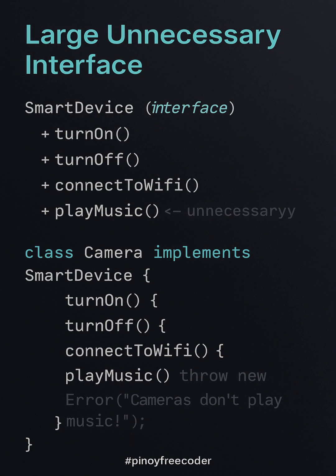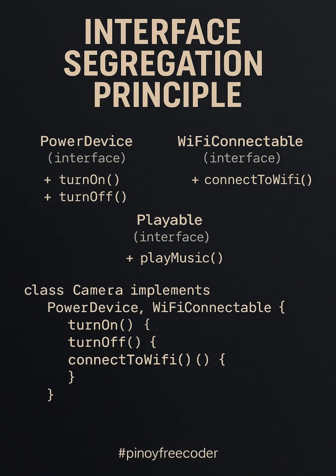The Interface Segregation Principle tells us that we should avoid forcing classes to implement methods they don't need. In this example, we have a smart device interface that includes unnecessary methods like play music, which a class like camera doesn't require. The camera class is forced to implement play music, even though it doesn't make sense, which is inefficient and violates ISP. To fix this, we can break down the large smart device interface into smaller, more specific interfaces.